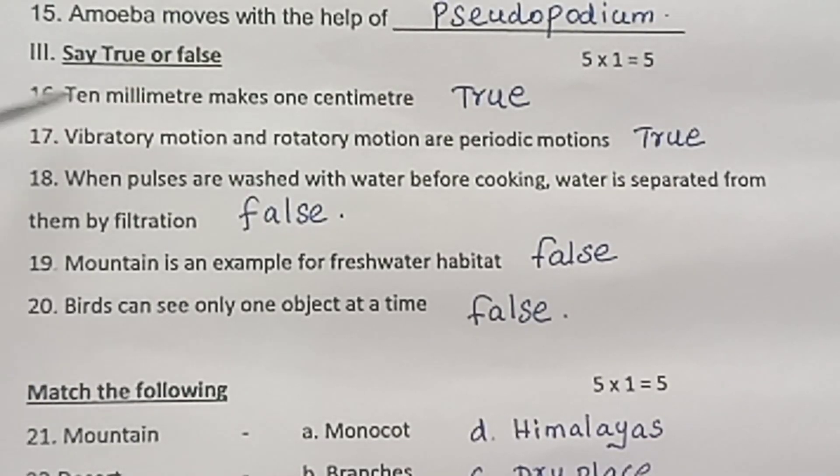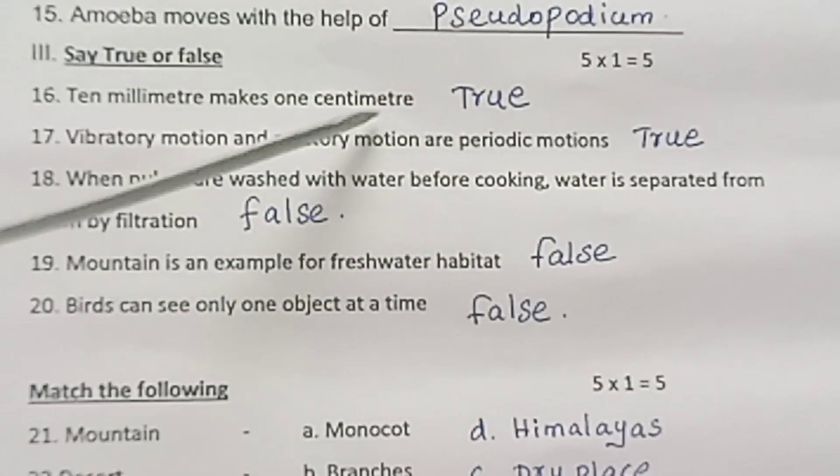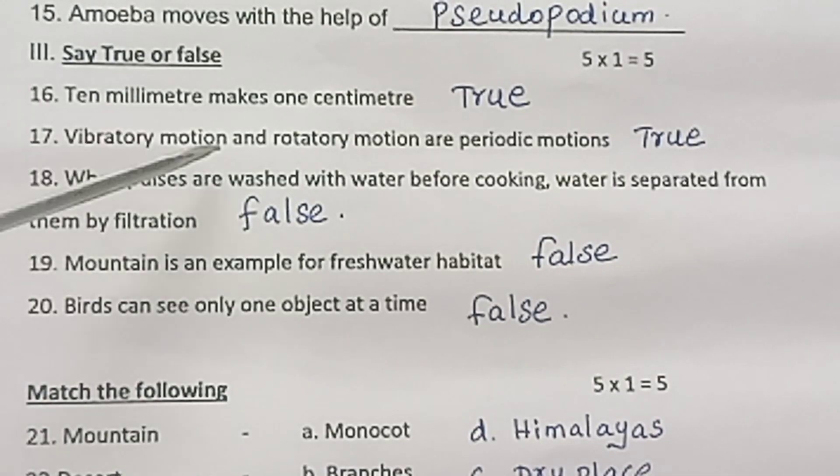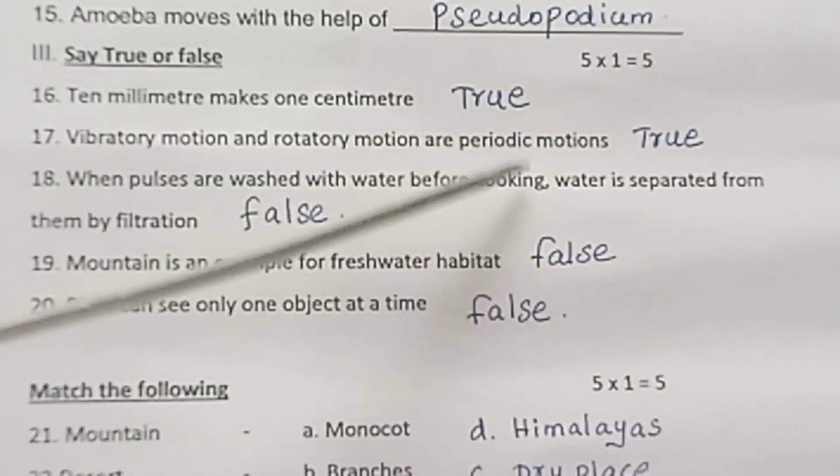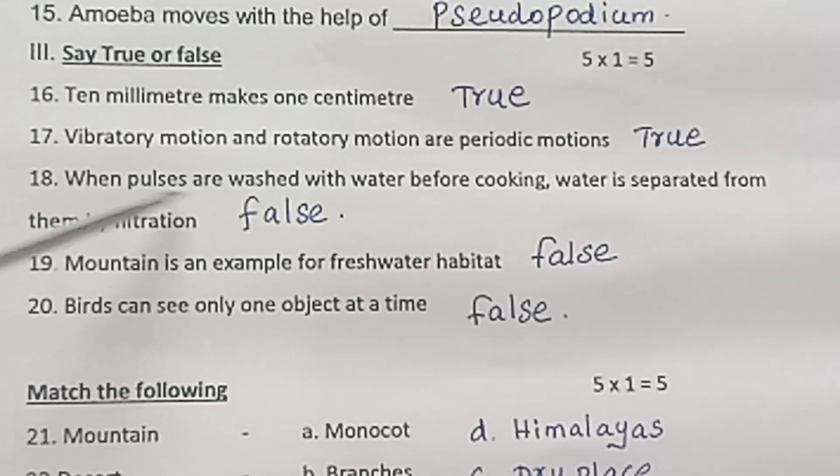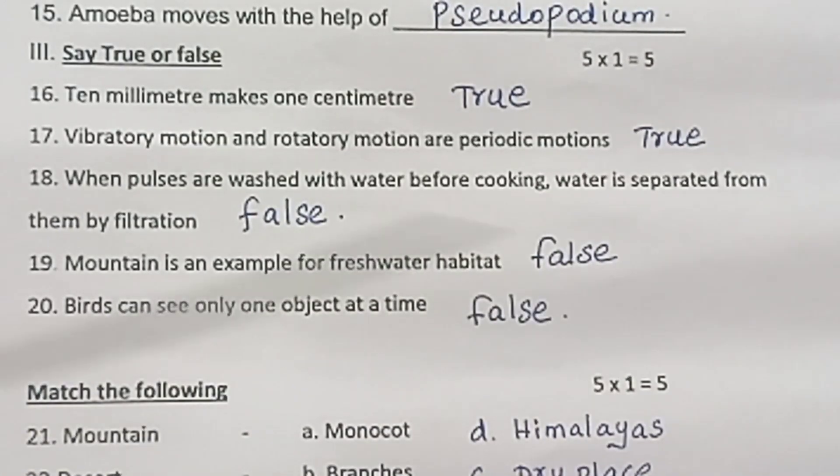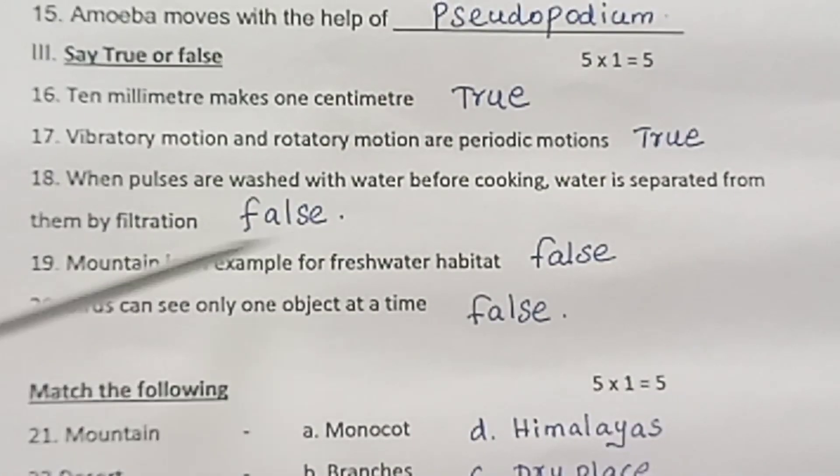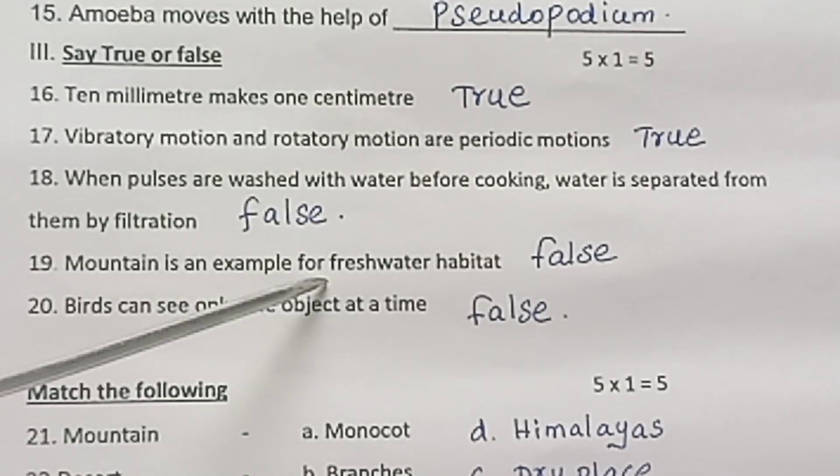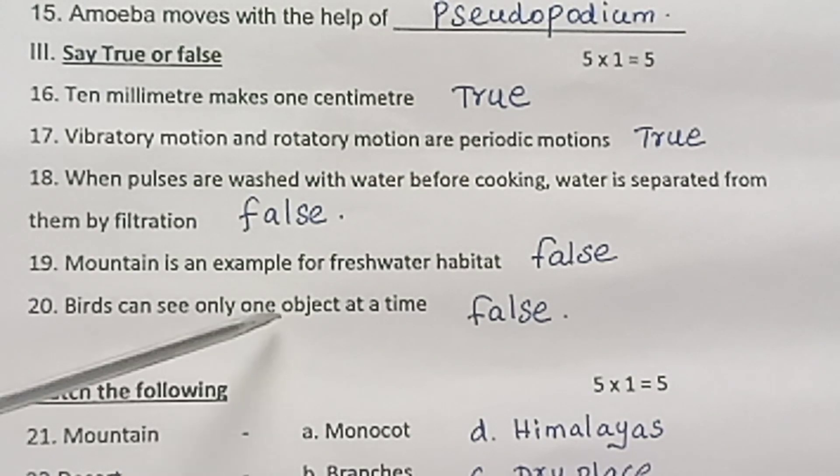Numeration 3. Say true or false. 10 mm makes 1 cm - True. Vibratory motion and rotatory motion are periodic motions - True. When pulses are washed with water before cooking, water is separated from them by filtration - False. Mountain is an example for freshwater habitat - False. Birds can see only one object at a time - False.